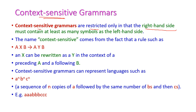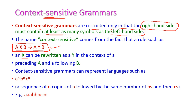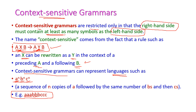Context sensitive grammar. These grammars are restricted such that the right hand side must contain at least as many symbols as the left hand side. In a rule, the left hand side symbols should be equal to or less than the right hand side symbols — x in the left hand side is rewritten to y on the right hand side, and a and b come as they are. Context sensitive grammar represents languages such as a-power-n, b-power-n, c-power-n — that is, n number of a's followed by n number of b's followed by n number of c's. For example, three a's, three b's, and three c's is an acceptable string.